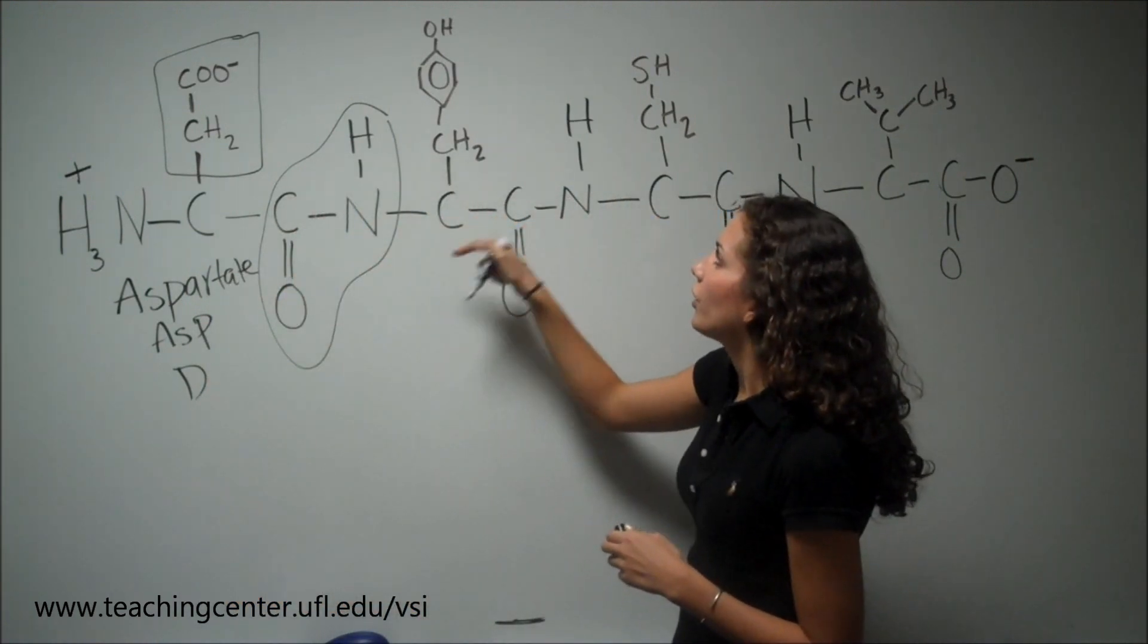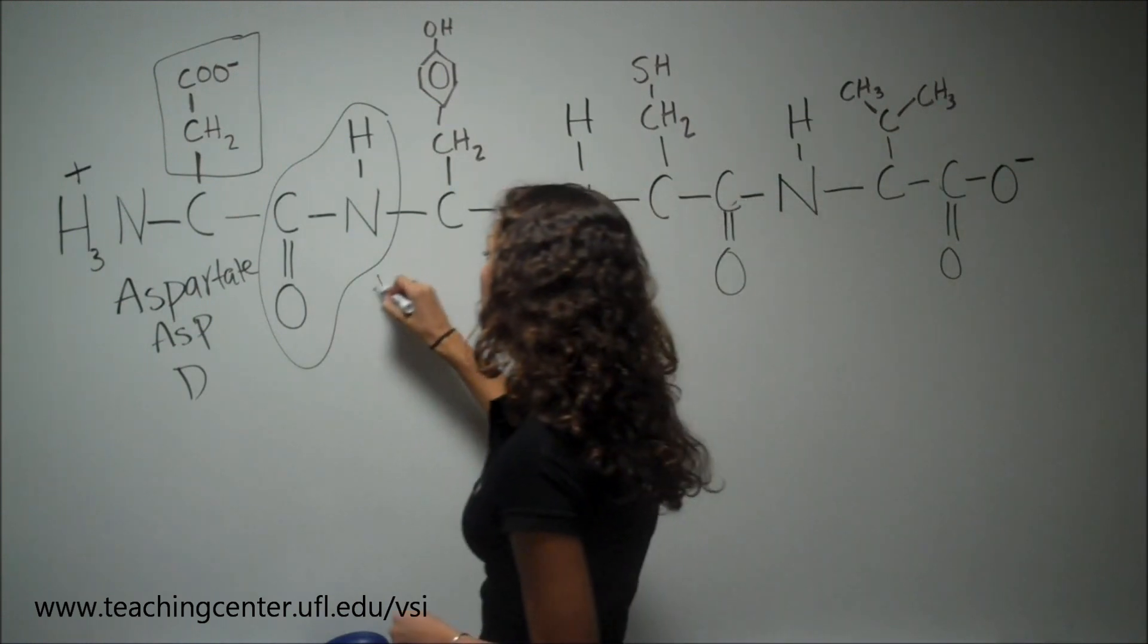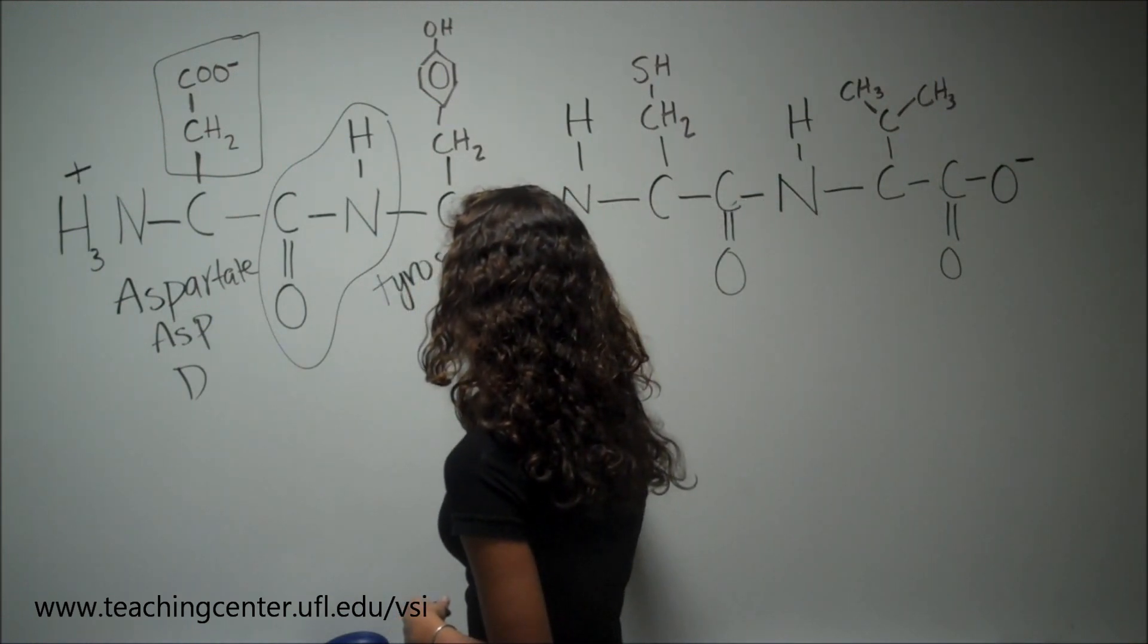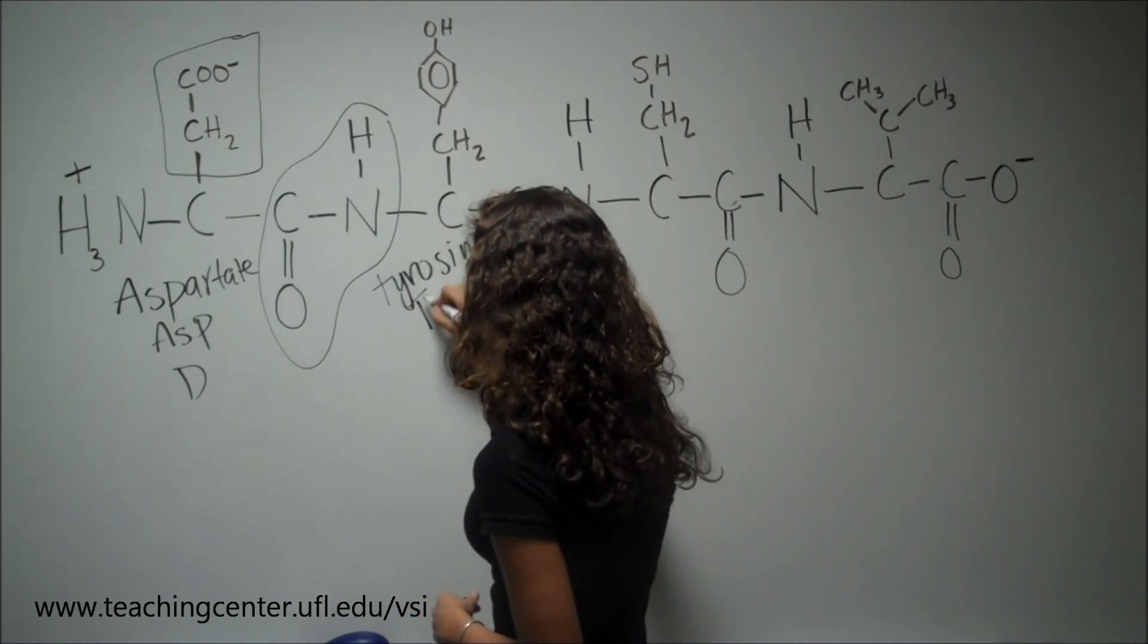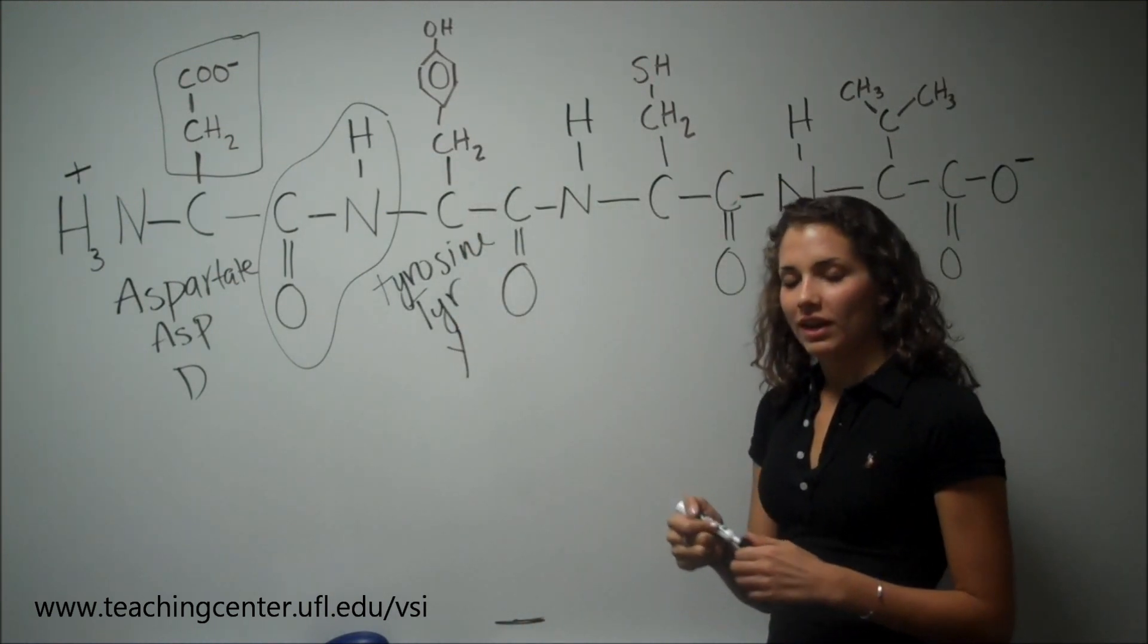The second R group is the one for tyrosine, and this could also be represented by one of its codes. This one you should become very familiar with.